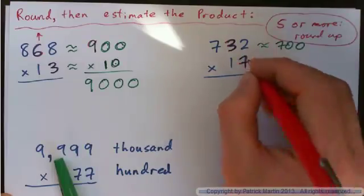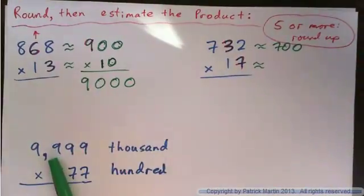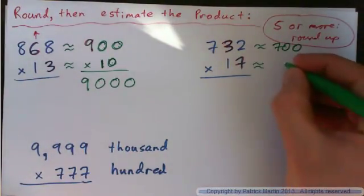The next digit after the ten is a seven. So would you round that guy up or down? You'd round it up to twenty.